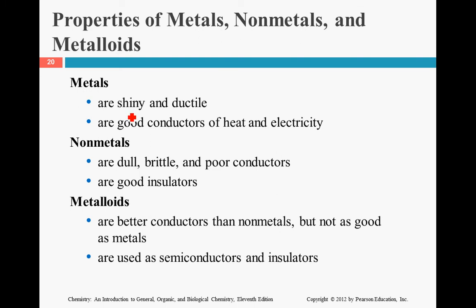If we looked at the characteristics, the properties. Metals are shiny and ductile. Ductile means that it can be pulled into a wire. Basically means you can shape them. Good conductors, they can conduct heat and electricity. Nonmetals are the exact opposites. Instead of being shiny, they're now dull. Instead of being able to be shaped and pulled into a wire, they're brittle. Instead of being conductors, they are not conductors. They're insulators. Metalloids are halfway. They kind of have characteristics of both. They're better conductors than nonmetals, but not as good as metals. And some are used as semiconductors. And some are used as insulators. It all depends. It kind of has a mixture of both.